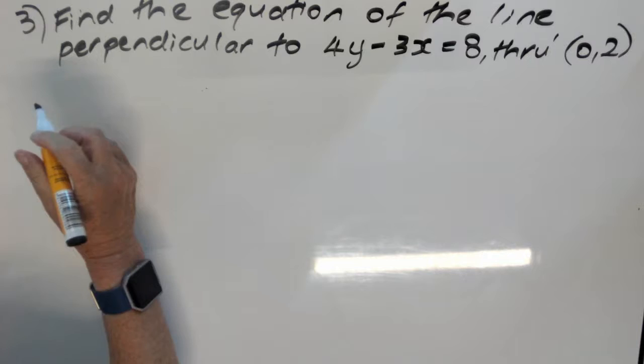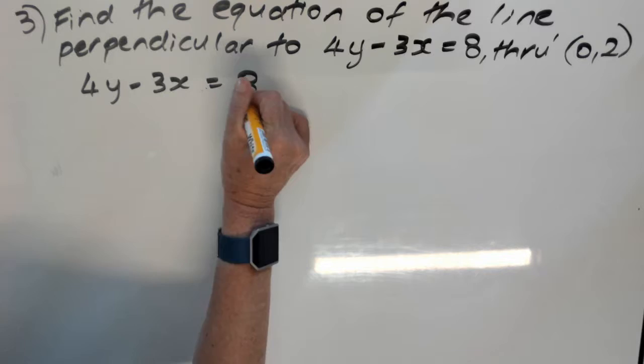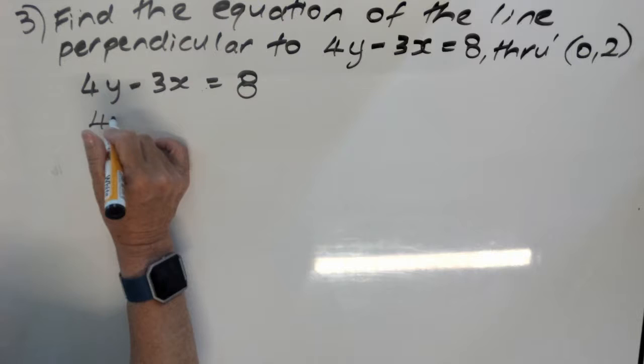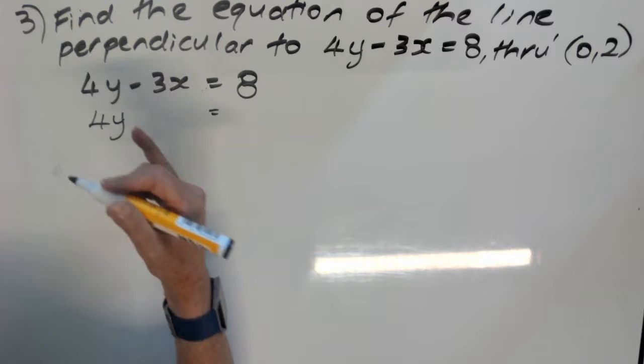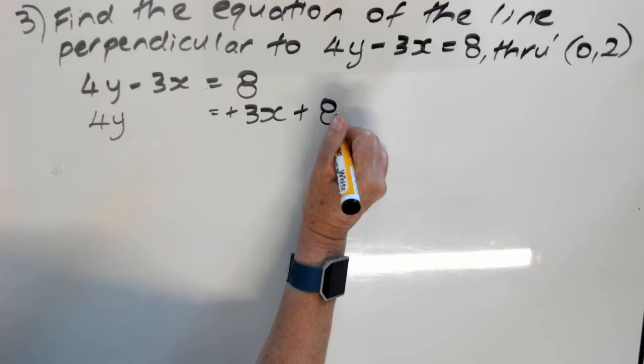So I'm going to rewrite that equation, 4y minus 3x equals 8, and I'm going to take the 3x to the other side of the equals. So I'm going to get 4y equals, now if it was minus 3x, the opposite operation is plus 3x, and 8 just stays as 8.